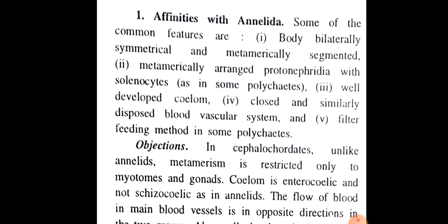In Hindi: The body is bilaterally symmetrical and metamerically segmented. Metamerically arranged protonephridia are present with solenocytes (flame cells), as found in some polychaetes. A well-developed coelom is found. The blood circulatory system is closed and similarly arranged. Filter feeding method is found in some polychaetes.